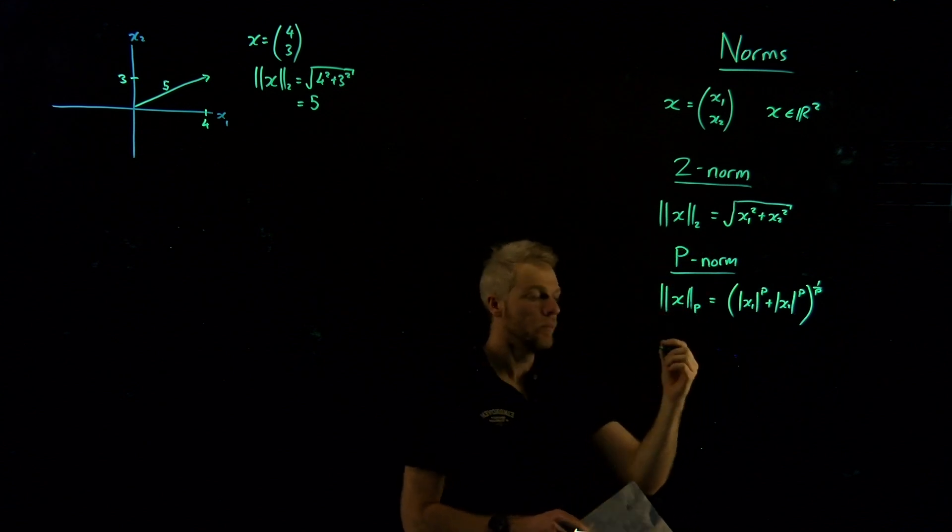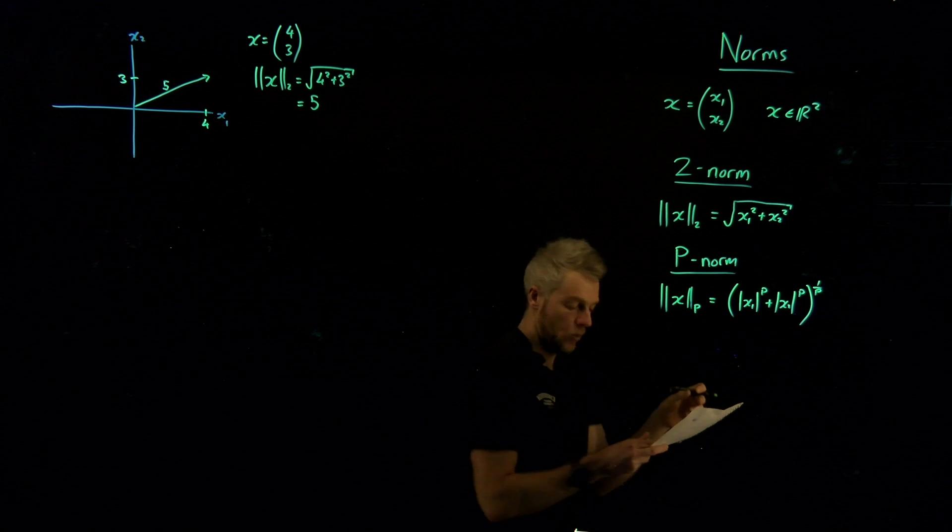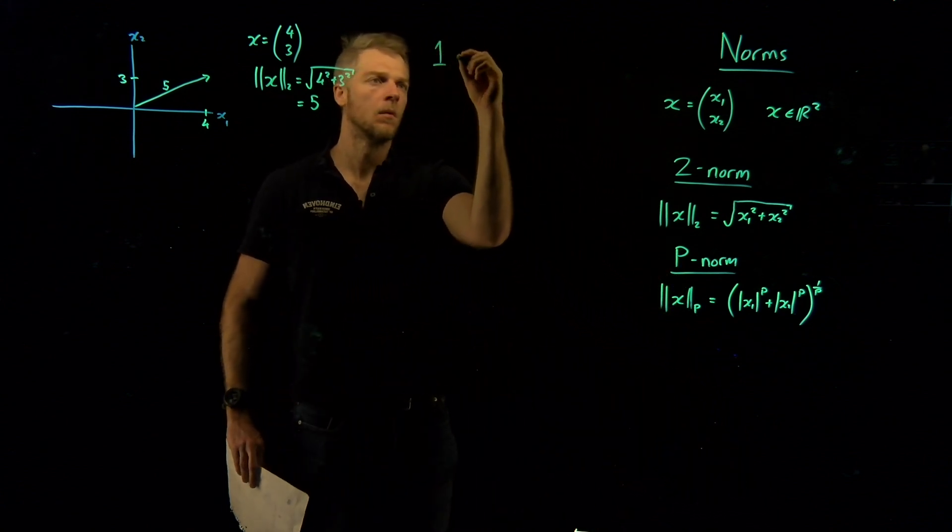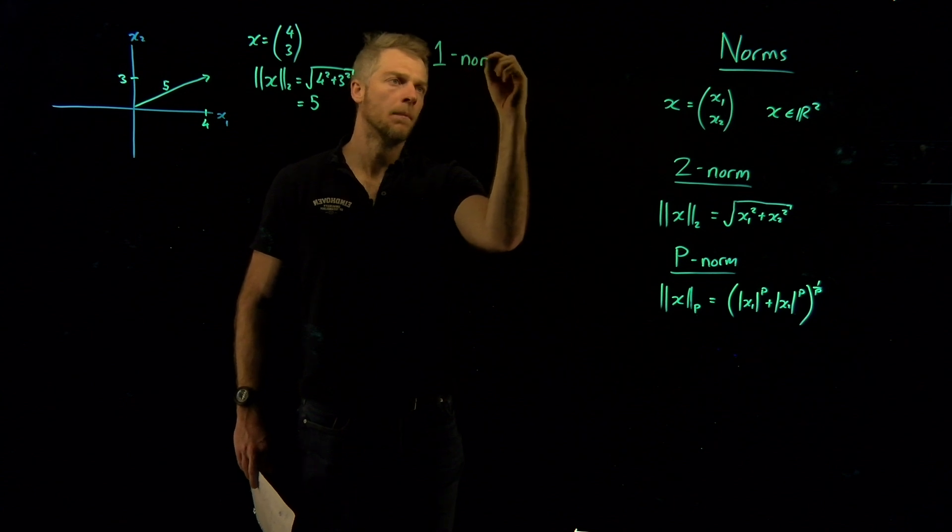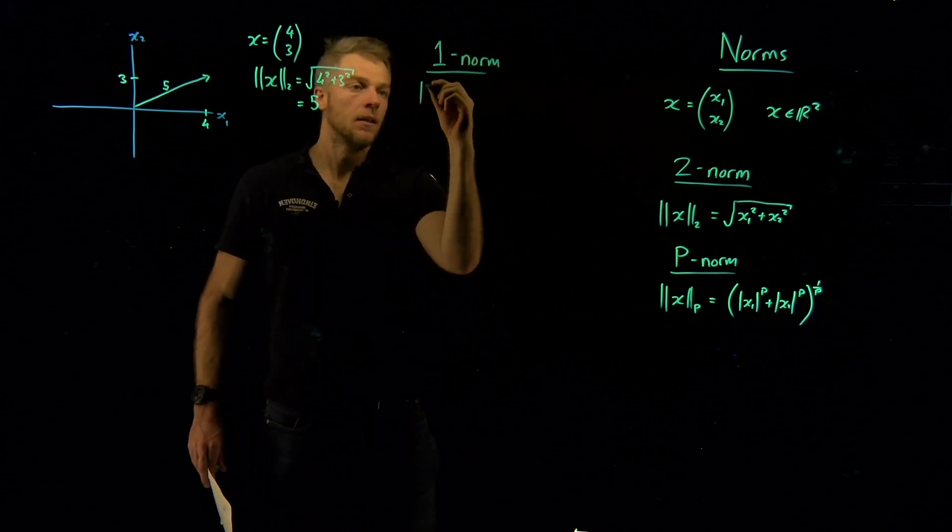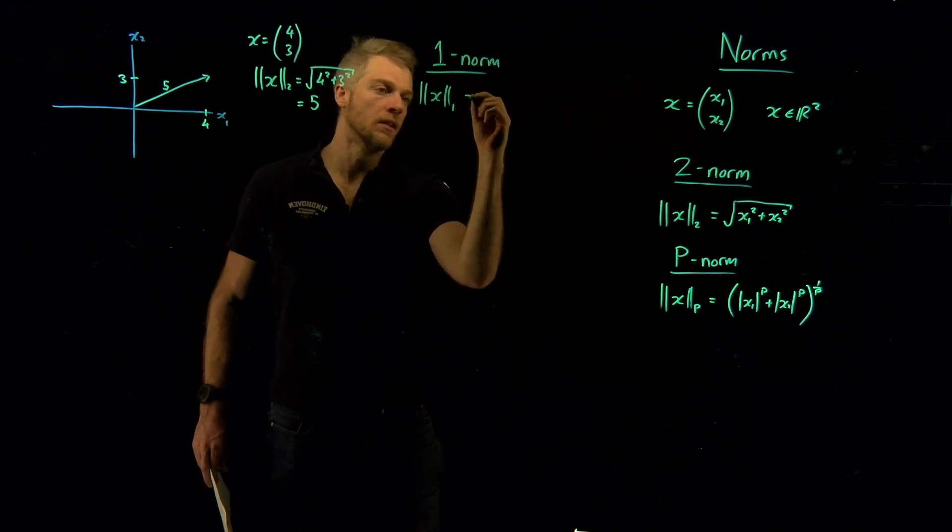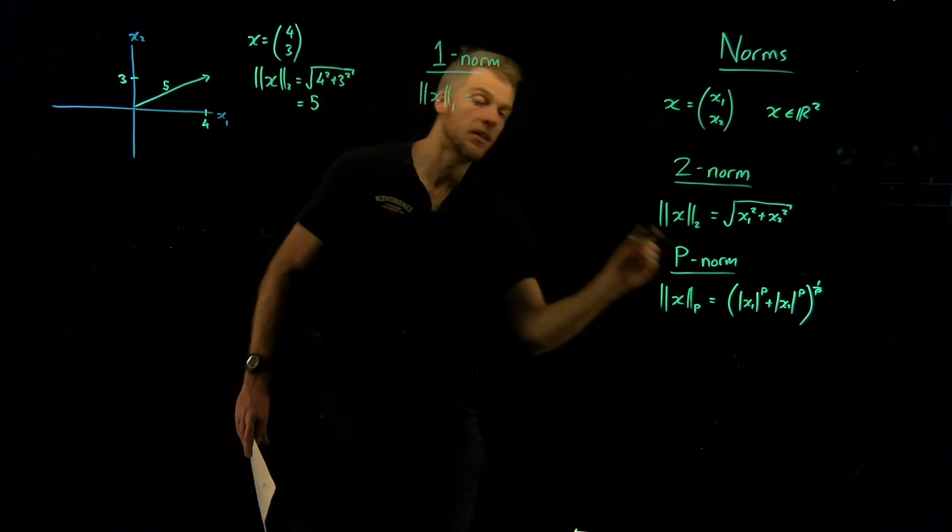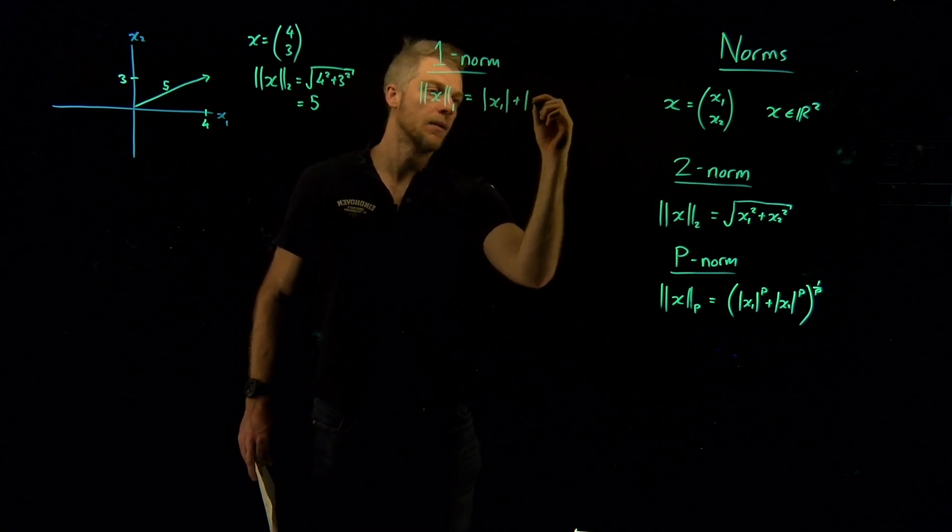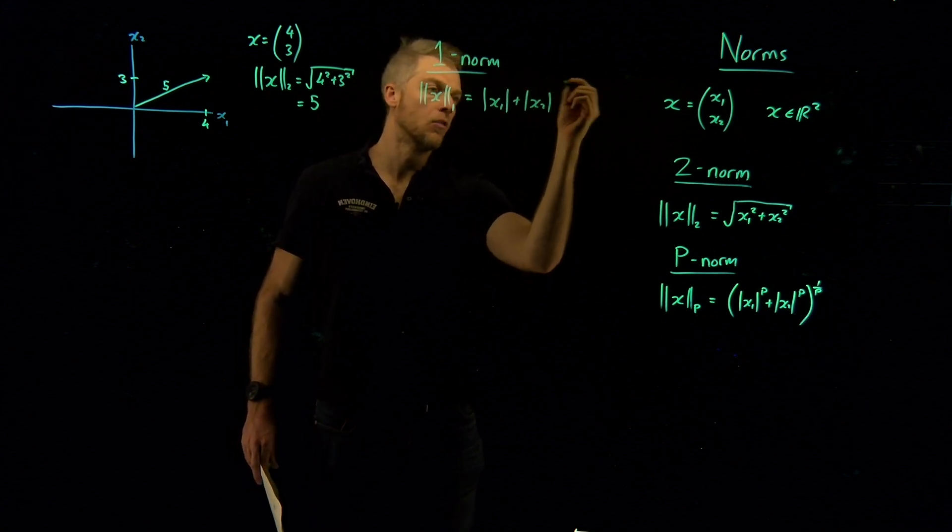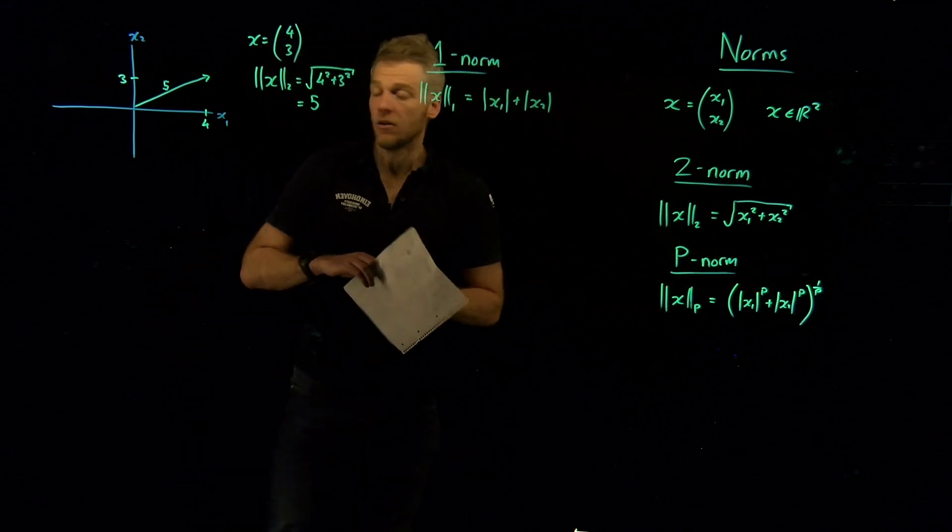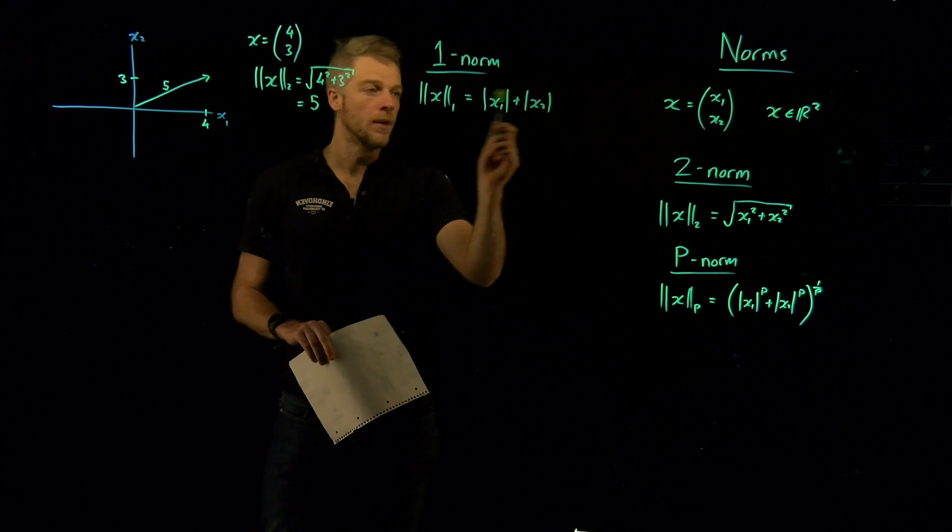Now let's talk about some additional norms. Let's talk about the 1-norm. And following the definition, that means that x subscript 1, that's the 1-norm, is just going to be the absolute value of x1 to the power of 1, plus the absolute value of x2 to the power of 1, all to the power of 1. So it's just the sum of the absolute values here.